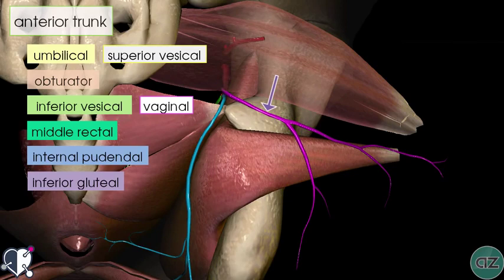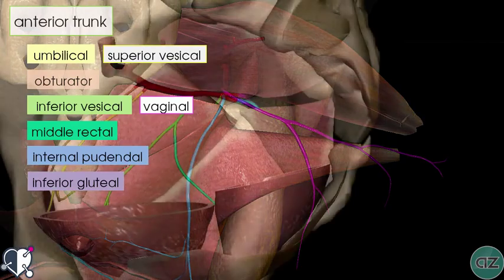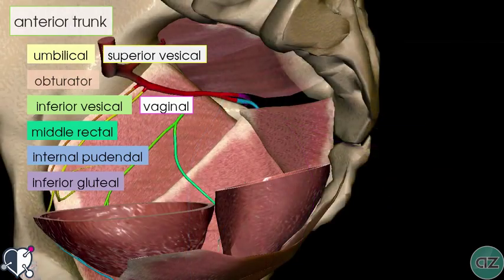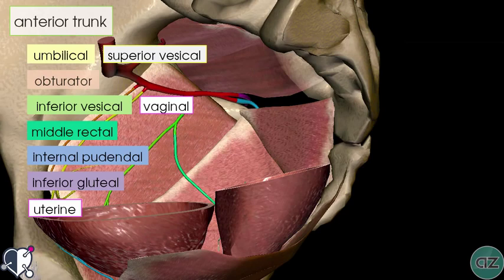The final artery to mention, which isn't visualised in this model, is the uterine artery, found in females. It runs in the broad ligament to provide the major blood supply to the uterus, and it also anastomoses with other vessels to provide the arterial supply to the ovaries as well as the vagina.